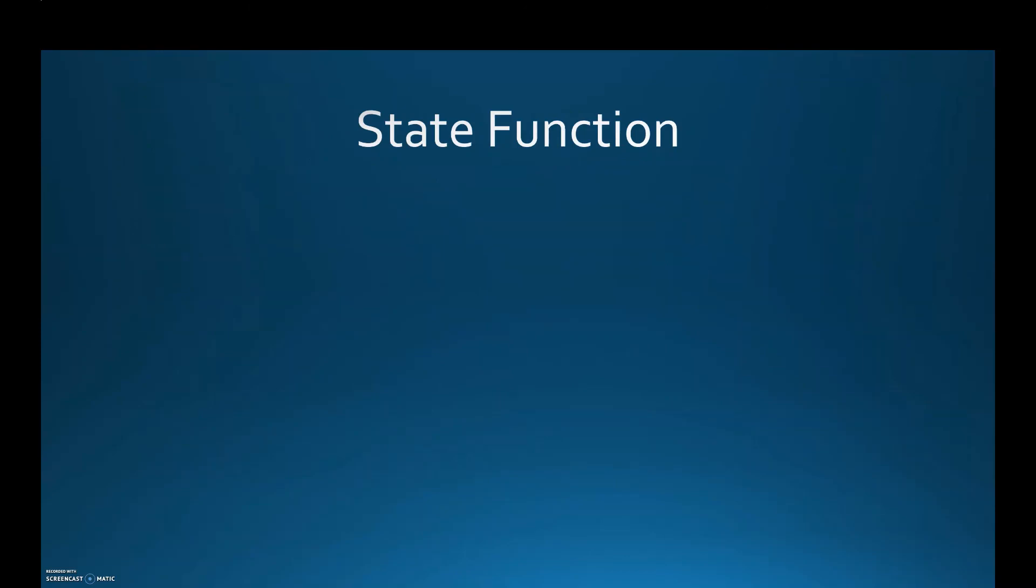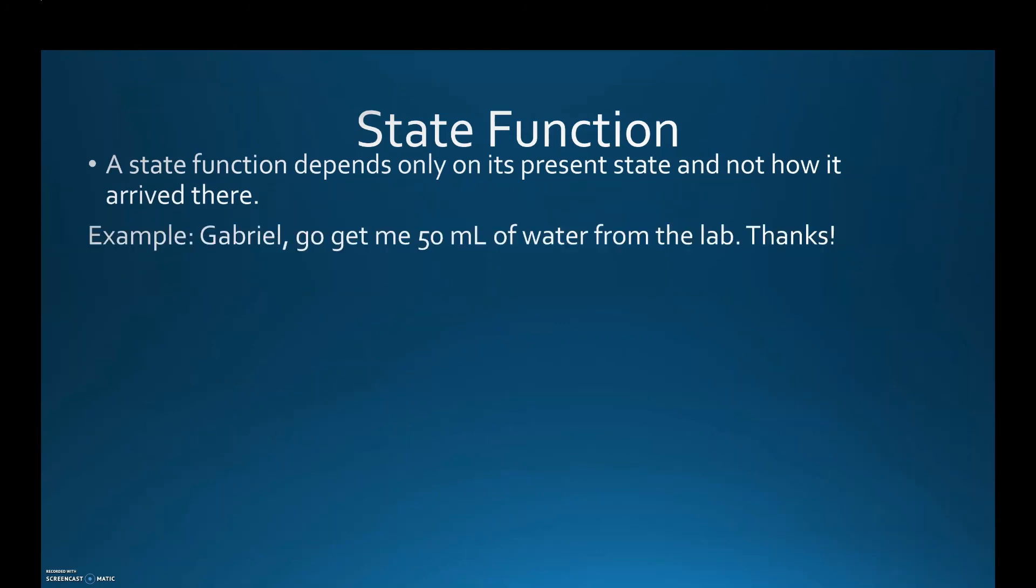State function. What is a state function? A state function depends only on its present state and not how it arrived there. What's that mean? Example: Gabriel, go get me 50 milliliters of water from the lab. Thanks. So Gabriel goes, gets me 50 milliliters of water from the lab, brings it back to me. I said thank you so much. Did I ask Gabriel how he got the water? No. All I asked him to do was get me 50 mils of water. So that's kind of an example of state function. It doesn't matter how it gets there. All that matters is that I get my 50 mils of water.